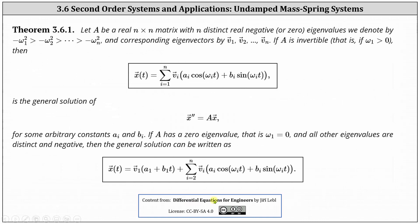This all leads to the following theorem we can use to write the general solutions to our second-order systems in the form of X double prime equals A times X. Let A be a real n by n matrix with n distinct real negative or zero eigenvalues. We denote it by negative omega one squared is greater than negative omega two squared and so on all the way down to greater than negative omega sub n squared and corresponding eigenvectors, the vectors V1 through Vn. If A is invertible, that is if omega one is greater than zero,